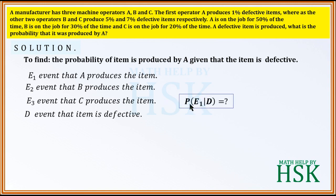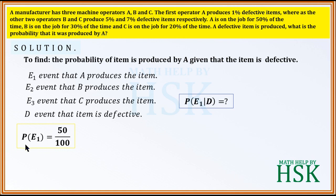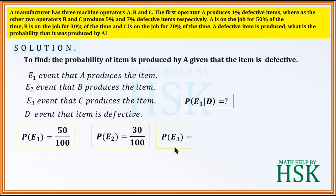We are required to calculate P(E1 | D). The prior probabilities are: P(E1) = 50/100, since A is on job 50% of the time and produces 50% of items. Similarly, P(E2) = 30/100 and P(E3) = 20/100. By using Bayes' theorem, we set up the formula.